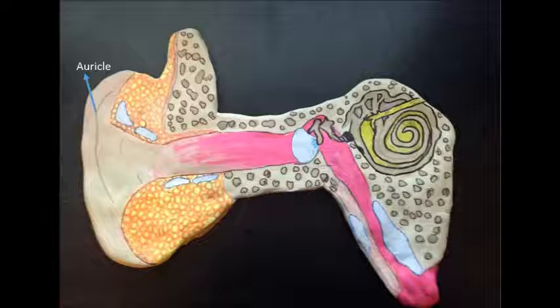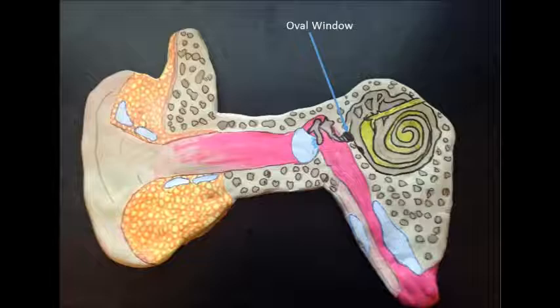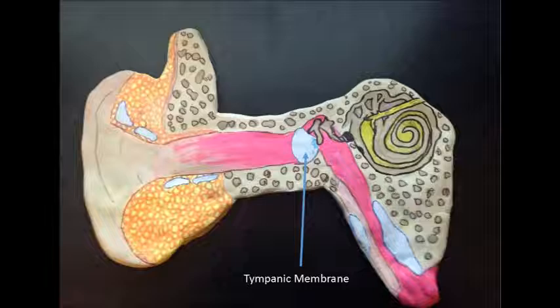The outer ear contains the auricle of the ear and the external acoustic meatus. The middle ear contains the auditory ossicles, the oval window, the tympanic cavity, and the tympanic membrane.